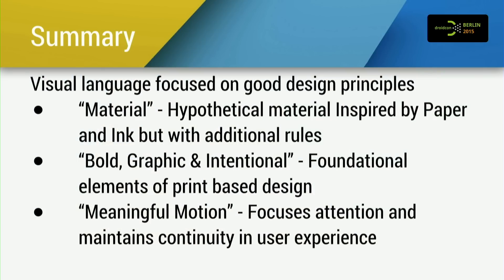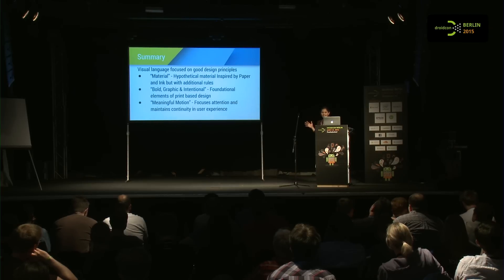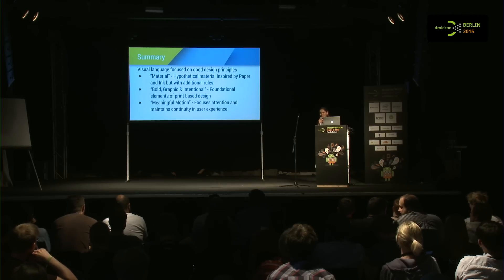To summarize, we set out to learn about three things: the philosophies behind material design; why we should use bold and graphical colors and where the inspiration comes from; what the floating action button is; and why you should use meaningful motion in your animations and transitions, focusing users' attention on the main elements on the screen. I hope with that I achieved my goal. Do you feel like you're at least on the track to understanding material design and will go back and read the design documents to add more polish to your apps? These little things make a lot of difference.